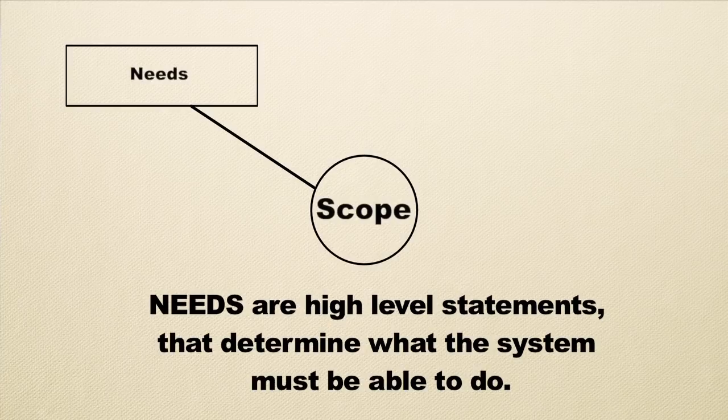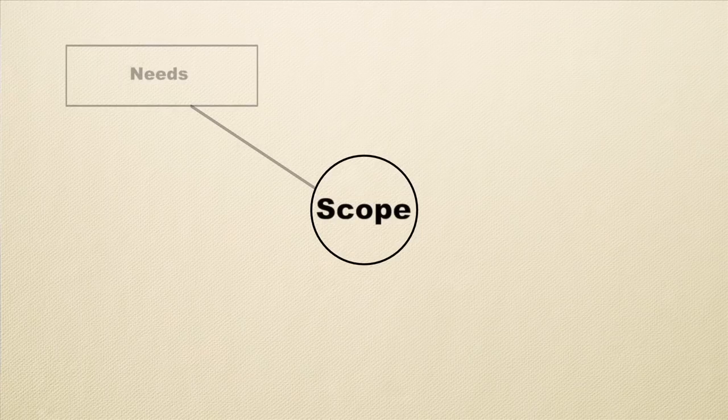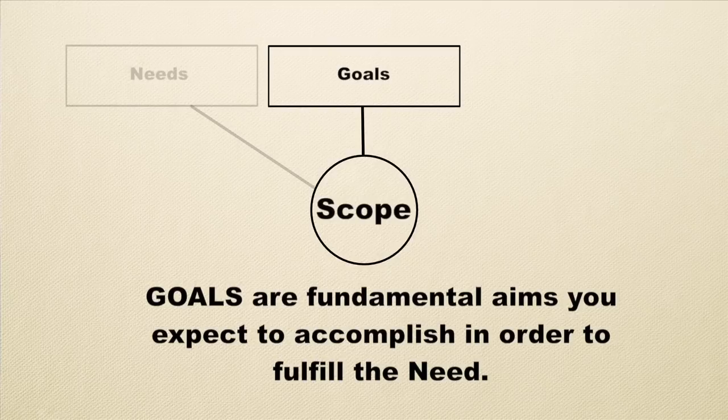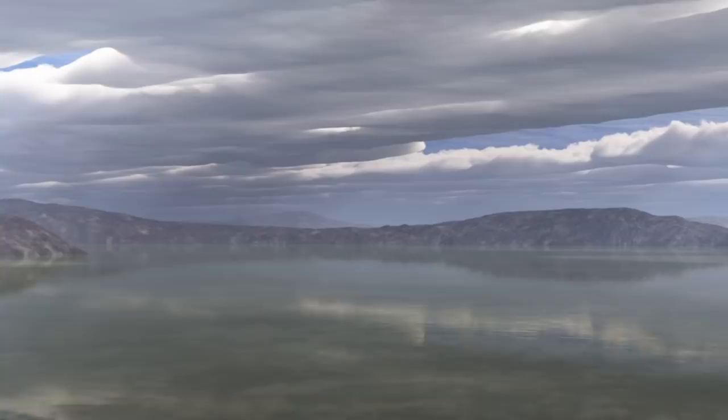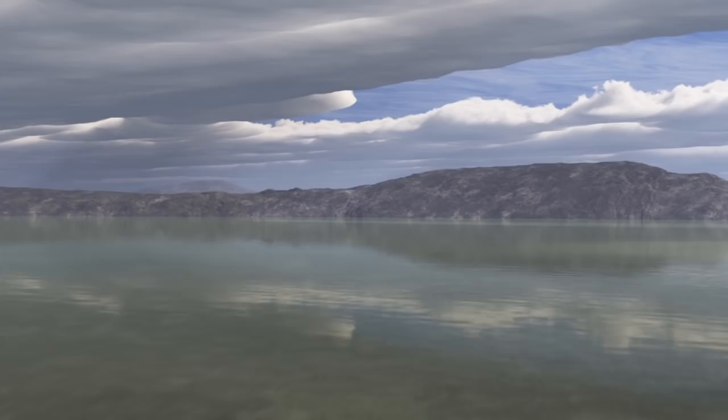The next step is to break that down into a lower level of detail for the specific mission — its goals. Goals are some fundamental aim that you expect to accomplish in order to fulfill the need. For example, if the high-level need is to explore Mars and find whether it was ever habitable, a goal might be to find out if there was ever water on Mars. Finding water could give you clues as to whether Mars could have been habitable. So you can see the connection: a need is a very high-level statement, and a goal is something a little bit lower level, working toward defining a specific spacecraft to accomplish these things.